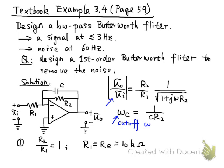Next, we will pick a cutoff frequency. Because we know the maximum possible frequency of the real signal is 3 Hz, the textbook simply picks the cutoff frequency to be 3 Hz. Of course, if you desire, you can also choose a cutoff frequency at a different value — slightly larger than 3 Hz, such as 5 Hz or 10 Hz, to include all the signals. But the textbook chooses 3, so let's stick to that value.